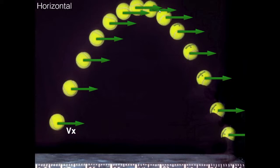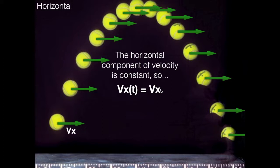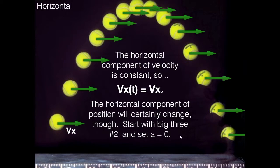Let's start with the horizontal component of velocity — notice how it's constant in magnitude and direction. Because of that, we have a very simple equation: the horizontal component of velocity as a function of time is just the initial value, vx₀. I'm using two subscripts: one for the x-direction and one for the initial value, so I know I'm talking about the horizontal component.